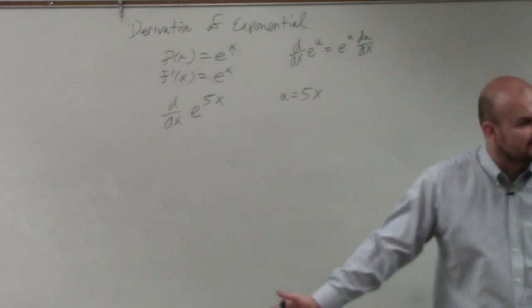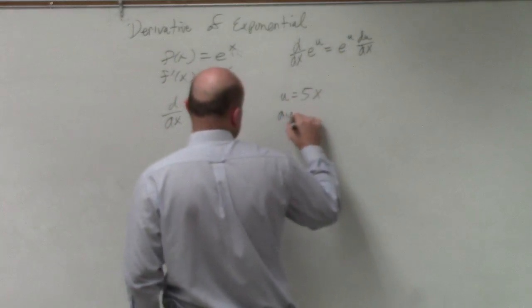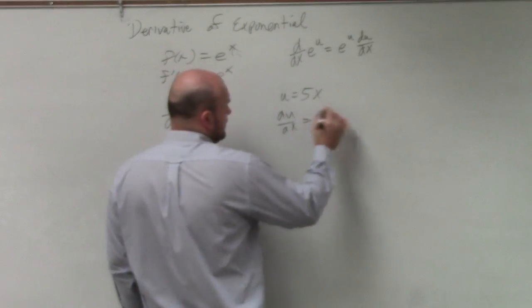You could also call that g of x and then do g prime. Or in my case, I'll do du over dx, which is just 5.